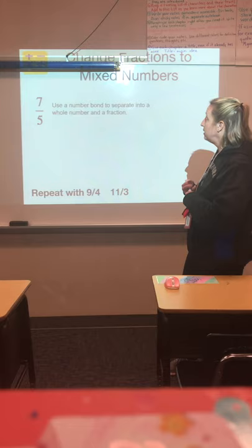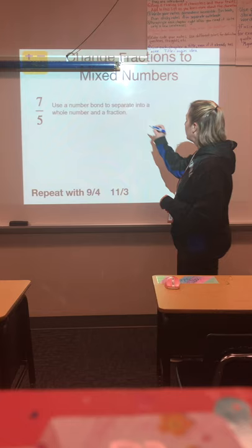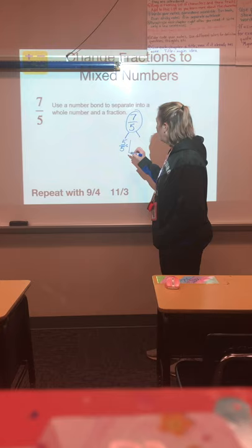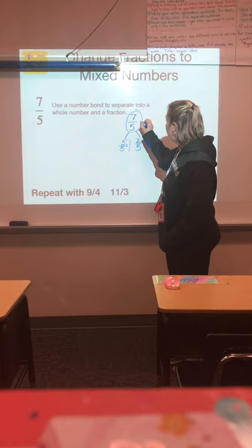So we're going to use a number bond to separate seven fifths into a mixed number, into a whole number and a fraction. So when we pull out five fifths, that equals one whole. How many fifths are left? Two fifths are left. So our seven fifths is equal to one and two fifths.